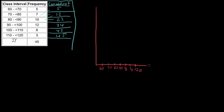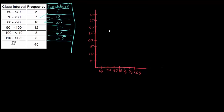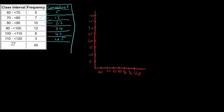On the vertical axis we have cumulative frequency, going up to 45. I'm going to mark it up in fives: 5, 10, 15, 20, 25, 30, 35, 40, and 45.